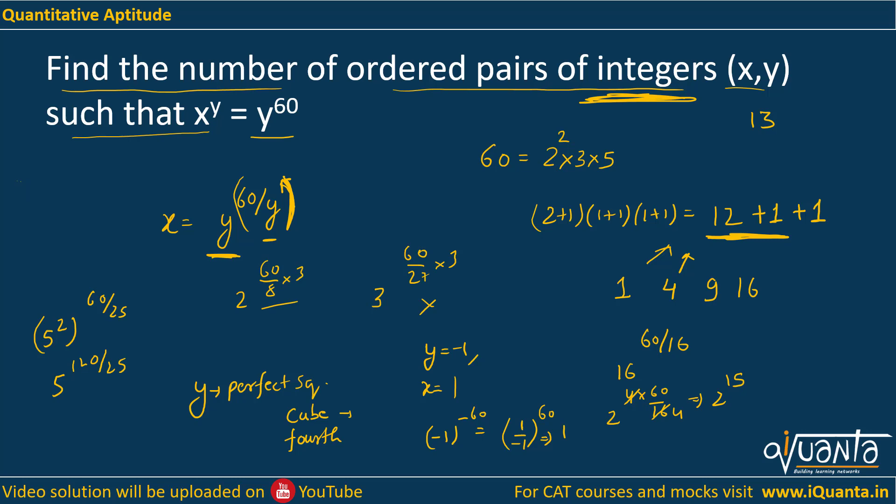If you proceed further, if you put y equals to minus 2, we will be getting x equals to minus 2 to the power minus 30. But then it would become 1 upon minus 2 to the power 30, and this is some huge number in decimals. So for further values of y like minus 3, minus 4, minus 5, minus 6, you will all be getting something in decimals. All the values of x will be in decimals, so we won't be considering those. Hence only one negative value of y is satisfying, that is minus 1.